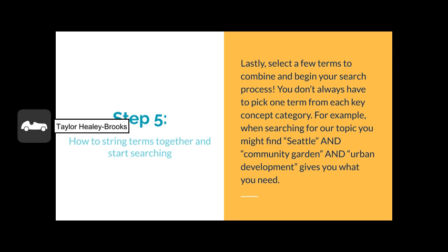Finally, we arrive at step five: stringing your terms together and starting to search. To do this, you would select a few terms that you've created and combine them to begin the search process. It may not be necessary to pick one term from each key concept category. However, now you have more than one term to draw from. If you don't get results from your original search, try some of the broader, related, or narrower terms that you've created. Don't be afraid to keep it simple — if searching with two or three terms gives you the best result, that's perfectly okay.